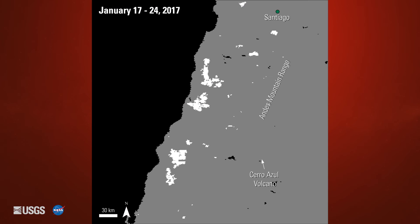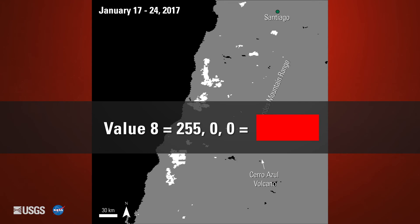The country of Chile experienced several fires in January of 2017. Here's an example of a thermal anomalies and fire mask over central Chile from January 17 to 24, 2017, shown using the MOD14A2 version 6 product. This product shows the pixels that were flagged as fire during the time period. Fire data are available as a single science dataset.